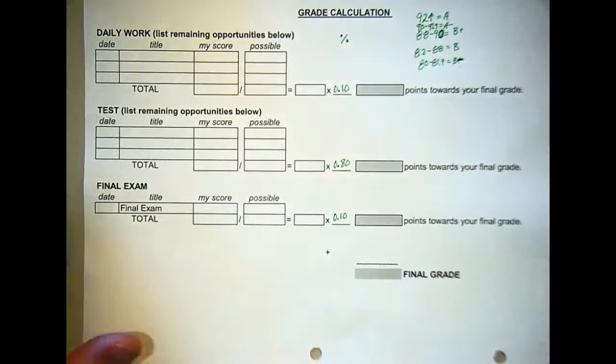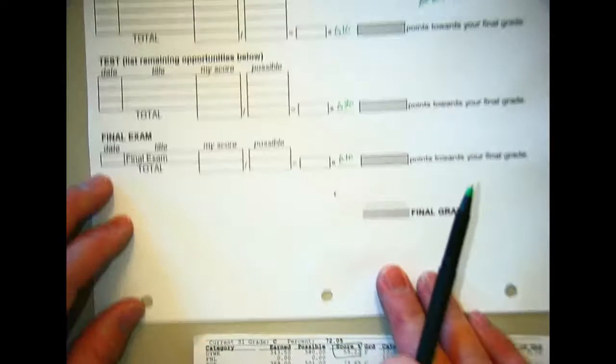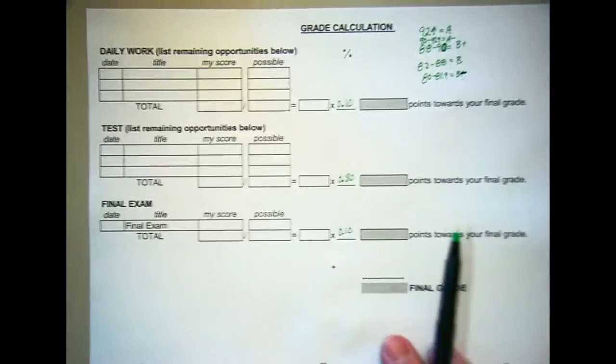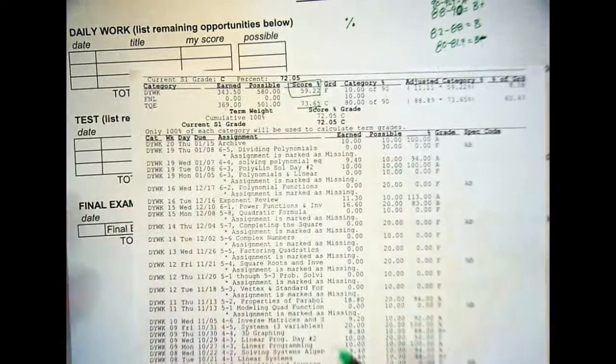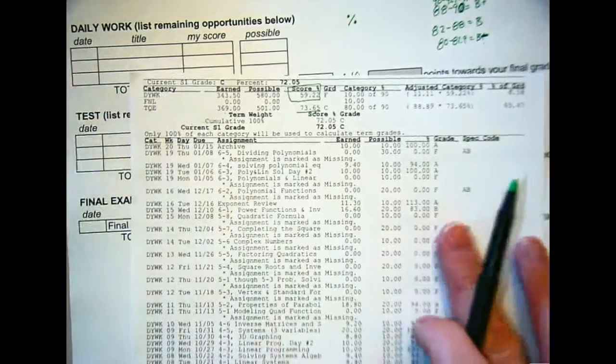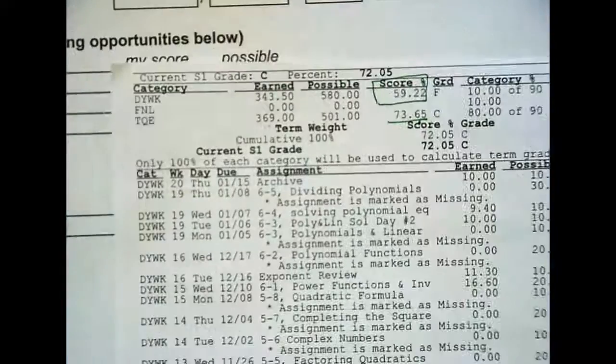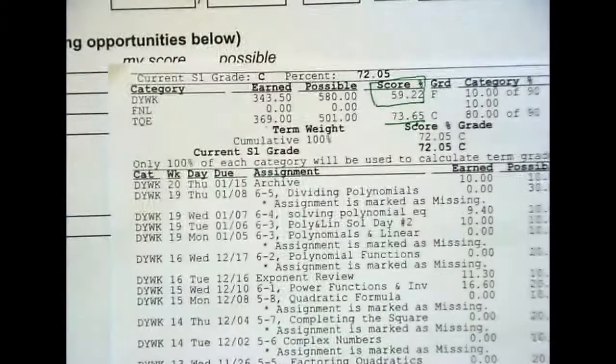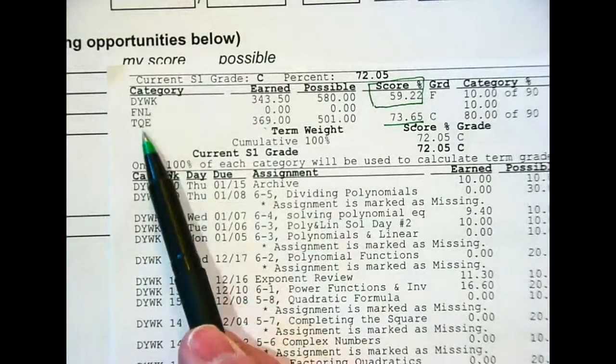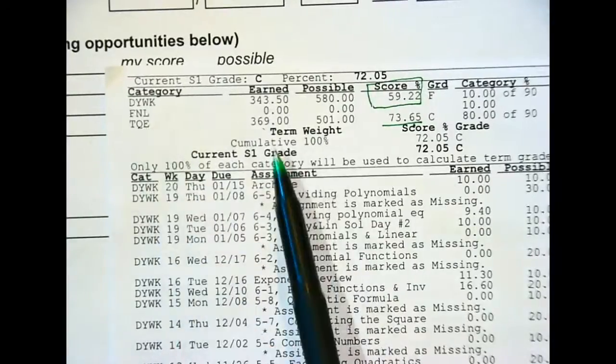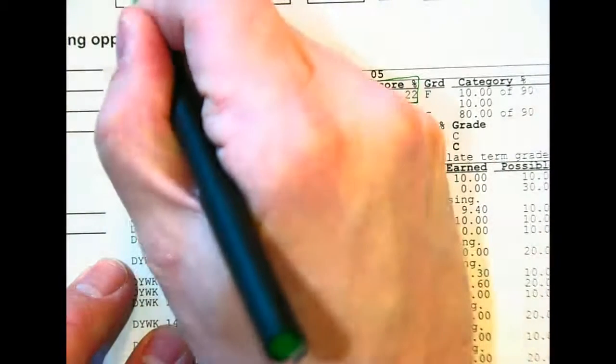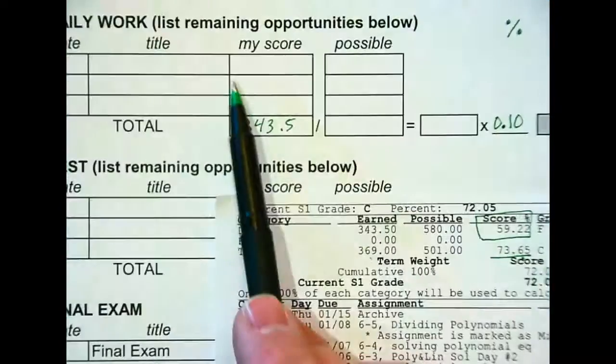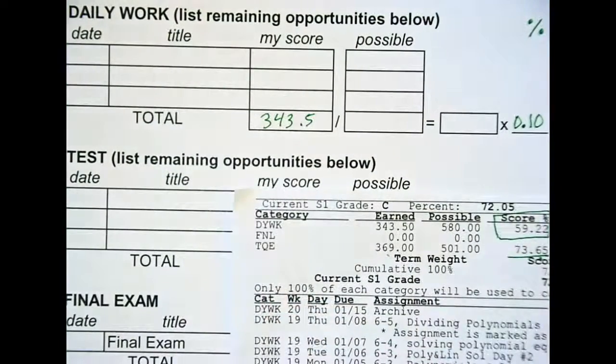All right. So, what you're going to do now is you're going to take, and I'm going to use one of these sheets. This is not anyone in this class. But these are my grades, let's say. My grades right here. If I'm looking at my progress report, the top of my progress report, it shows daily work, final, test quiz exams. Now, in our class, I have earned 343.5 out of 580 points. All this other area up here, I've given you extra space to add assignments if you're going to, but we don't have any other assignments to add right now.